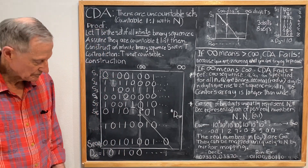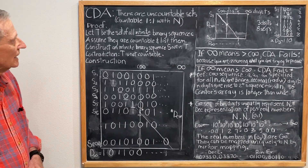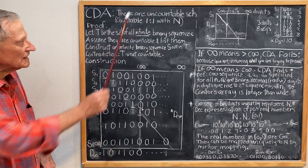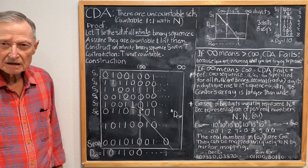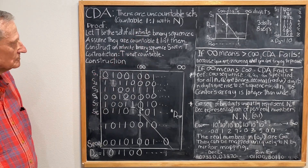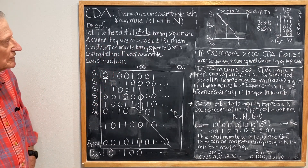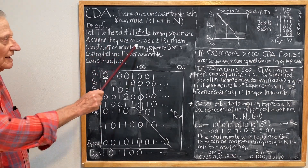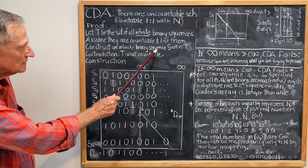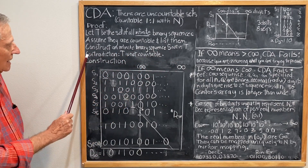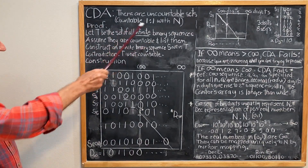To begin with, I'll briefly review Cantor's Diagonal Argument, which I got from the Wikipedia article. Cantor's Diagonal Argument basically proves that there are uncountable sets, where countable means one-to-one with the natural numbers. Cantor's proof proceeds as follows: let T be the set of all infinite binary sequences, assume they are countable and list them. Then construct an infinite binary sequence S not in T — contradiction — T is not countable. Therefore, there are uncountable sets.